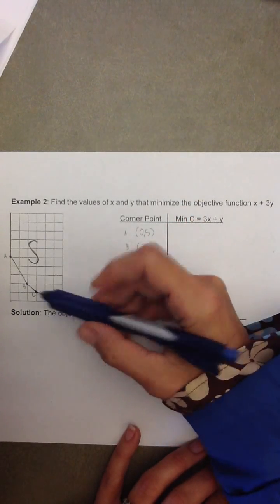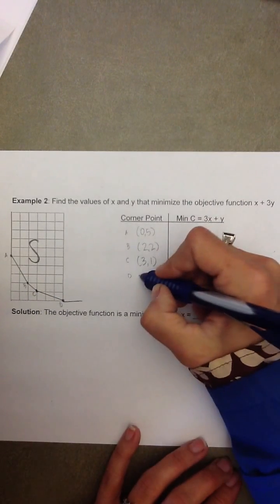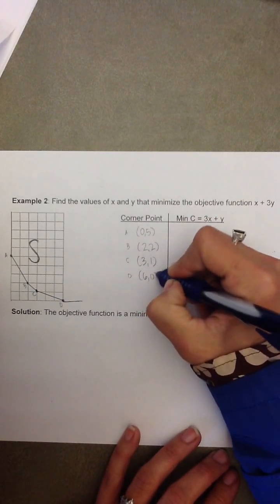And our last corner point D is right 1, 2, 3, 4, 5, 6. So, that's the point 6, 0.